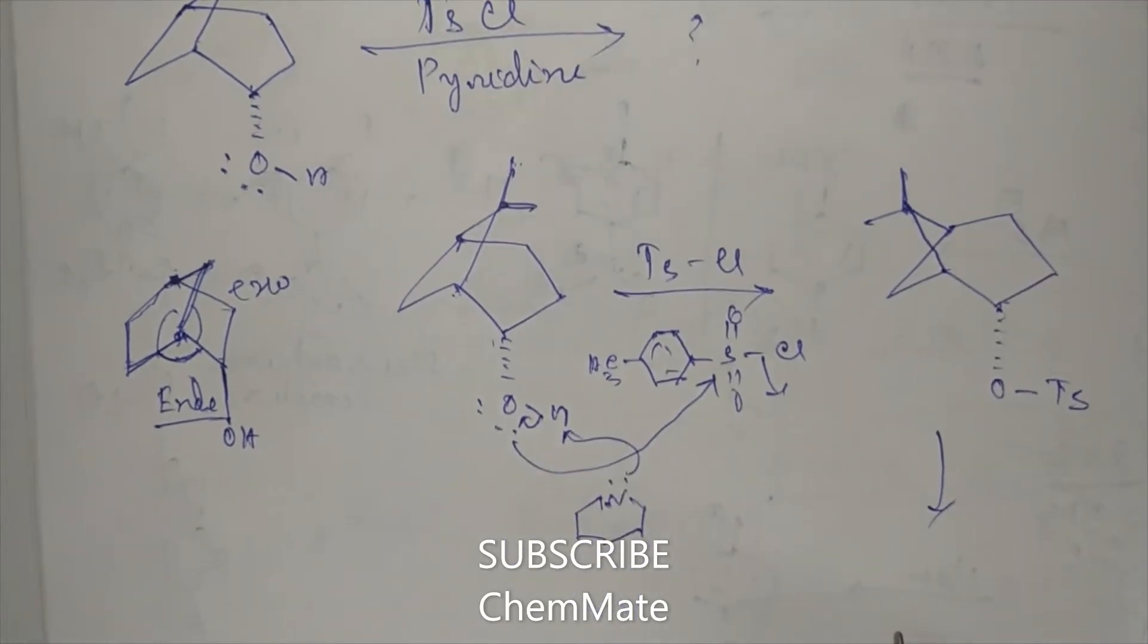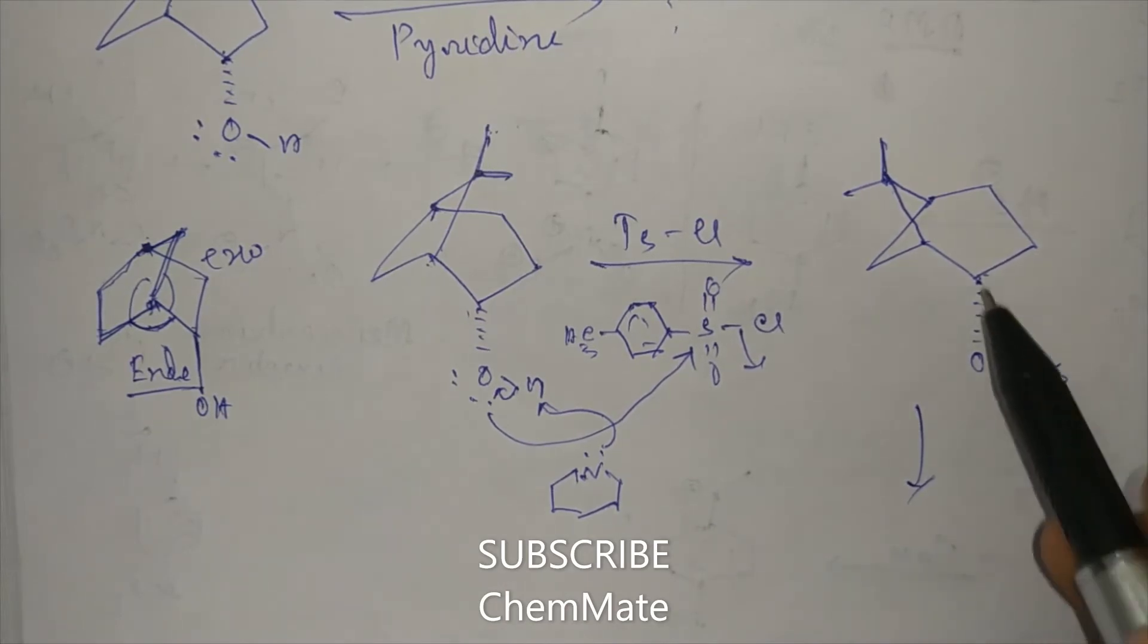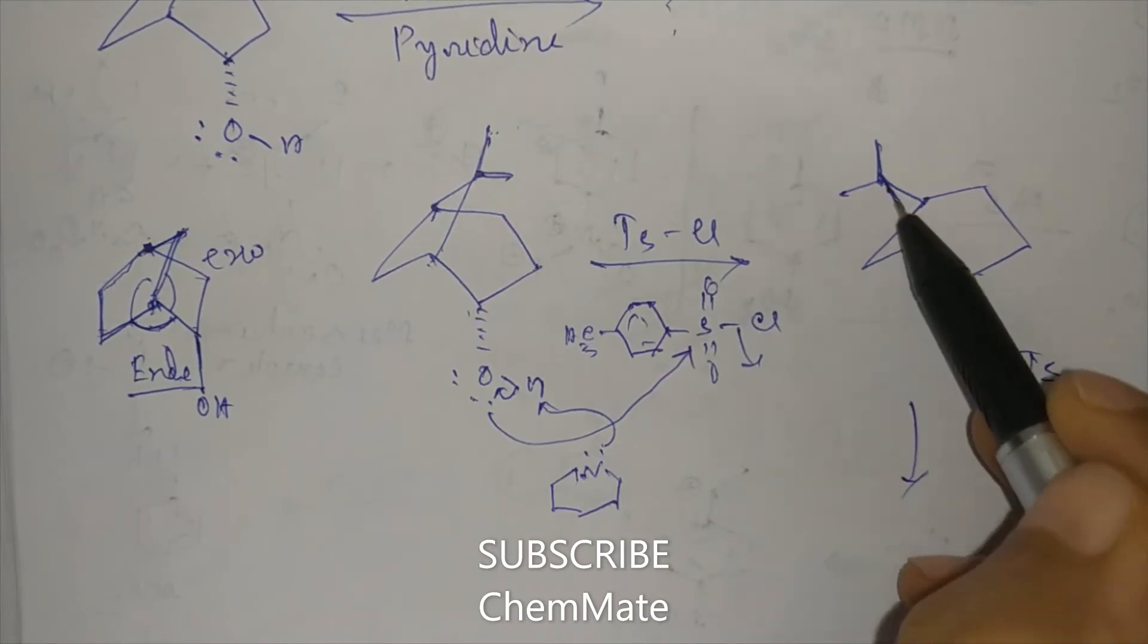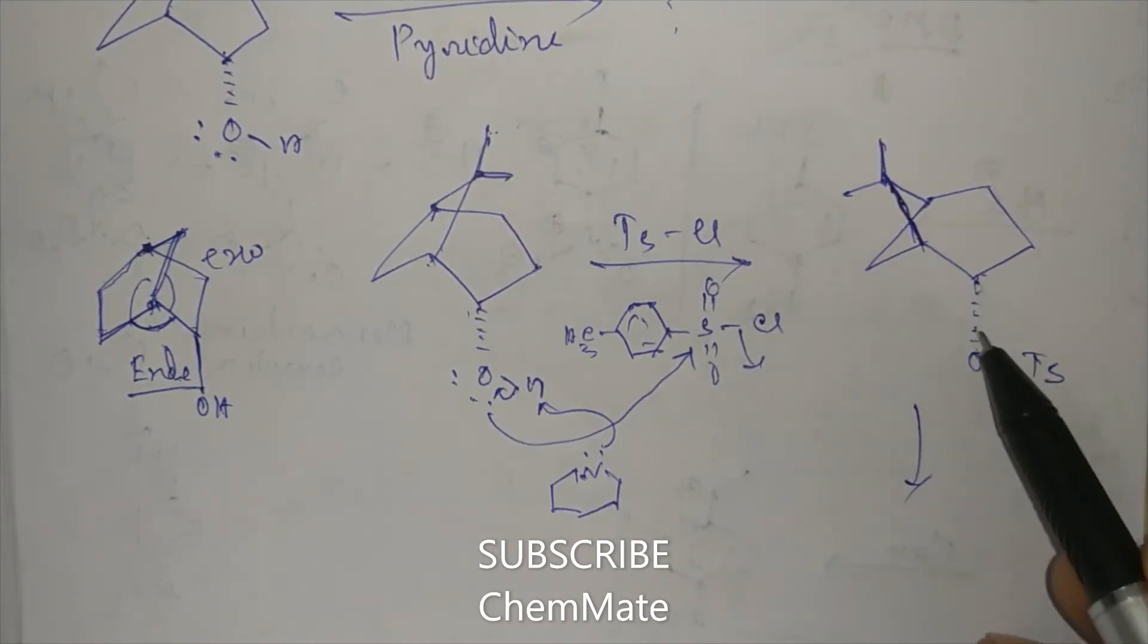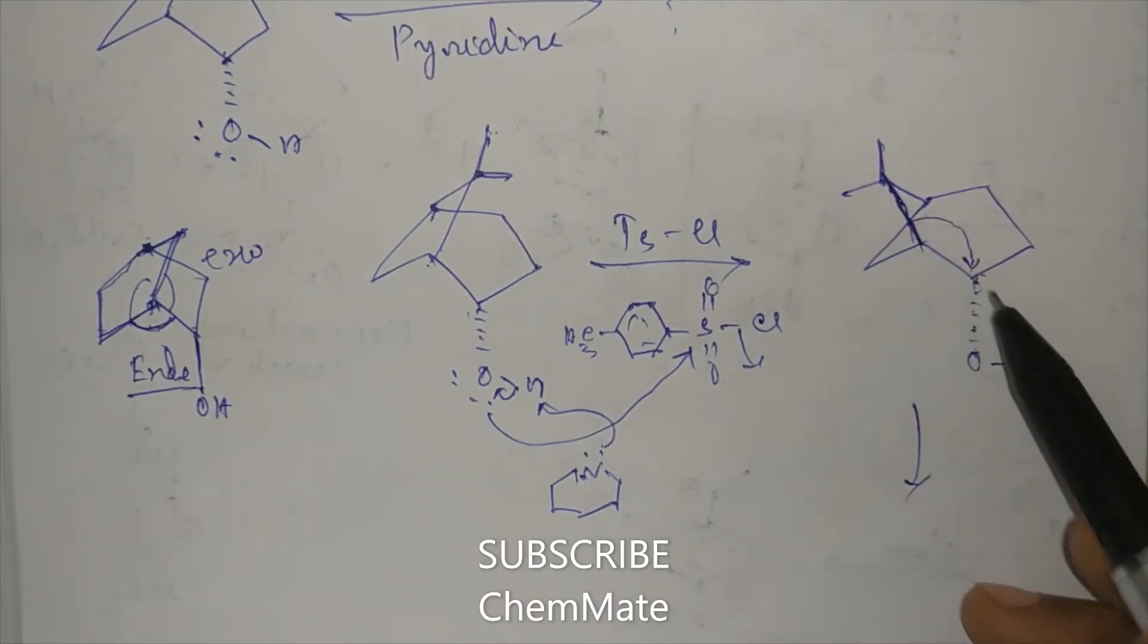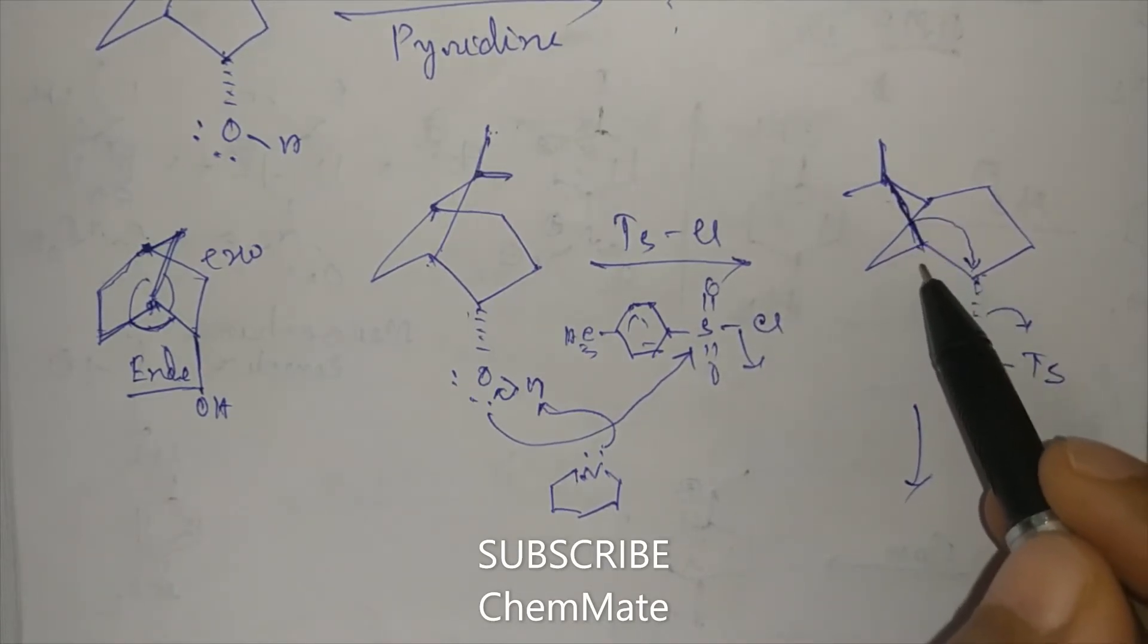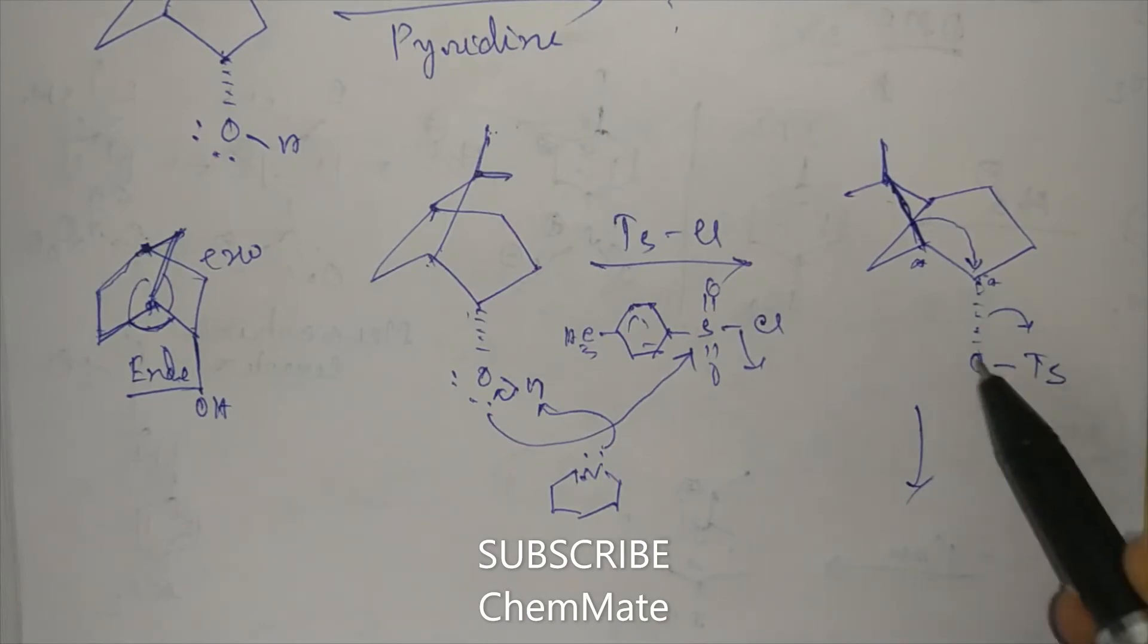Now from this OTs, this is a good leaving group. And here you can see that this sigma bond and this bond are anti-periplanar to each other. So this bond will assist in the departure of OTs group.